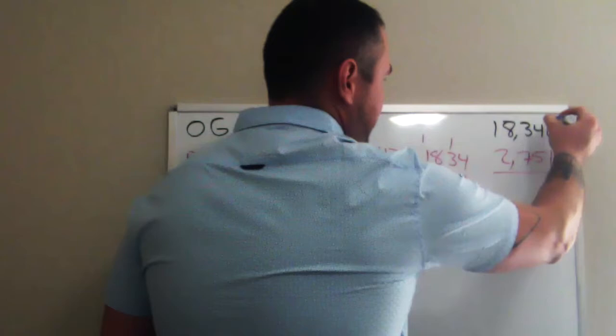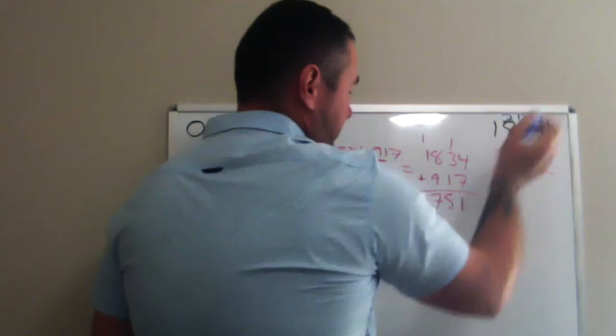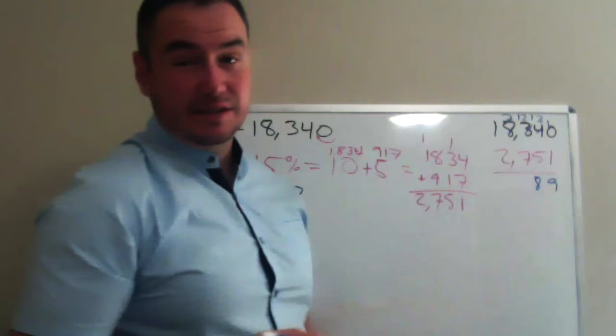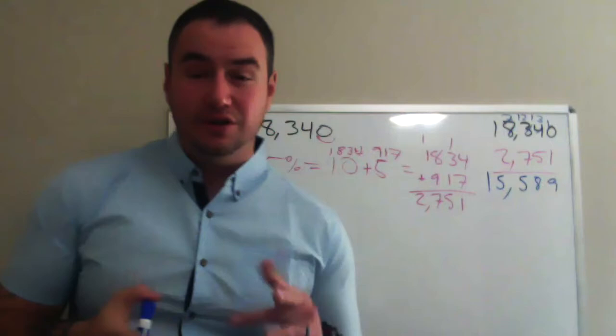This becomes a 10, so this becomes a 3, borrows. This becomes a 2, it has to borrow. And this becomes a 7, which doesn't have to borrow. So 10 take away 1, 9. 13 take away 5 is 8. 12 take away 7 is 5. 7 take away 2 is 5, 1. 15,589.